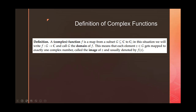We define complex functions similar to how we would define real functions. A complex function F is a map from a subset G of C to C. Here's a picture of what that looks like.